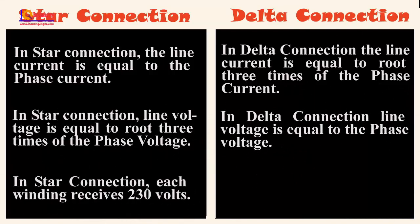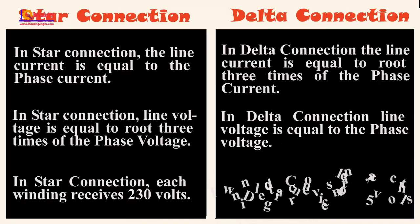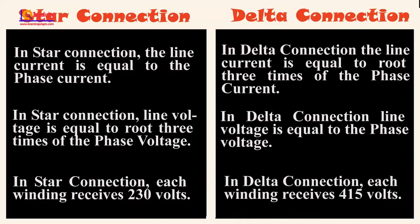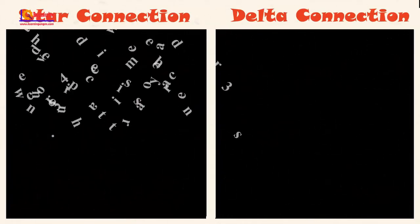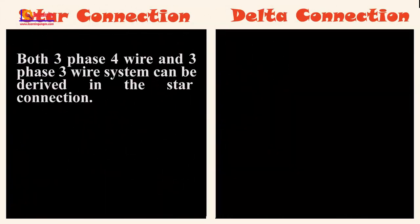In star connection, each winding receives 230 volts. In delta connection, each winding receives 415 volts.